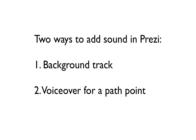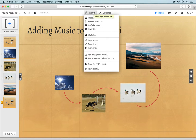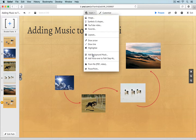Prezi lets you add sound to your presentations in one of two ways. The first way is to add a background track that will be played for the duration of your Prezi. To do this, open or create a new Prezi and then click on the Insert menu at the top of the page. Select 'Add Background Music' from the list.